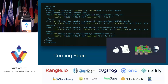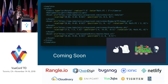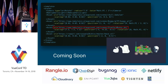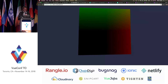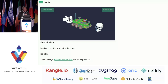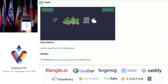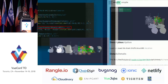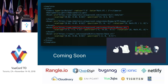Coming up soon, we're going to have model loading. You can load OBJ file formats, GLTF file formats, and STL file formats as well. Here's an example of those file formats getting loaded in. I tried to make it as simple as loading an image tag.